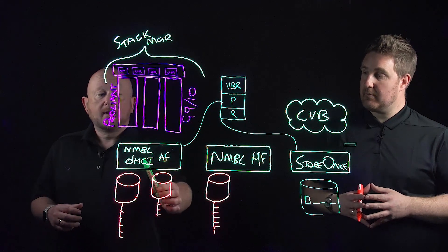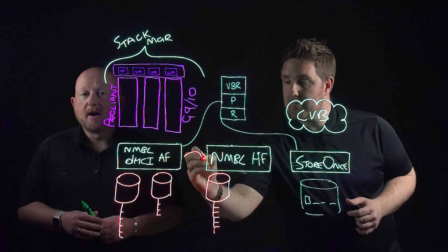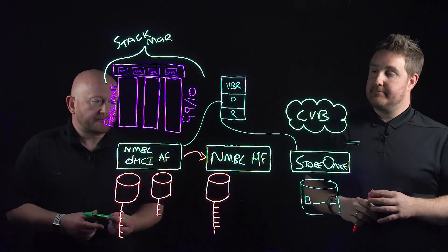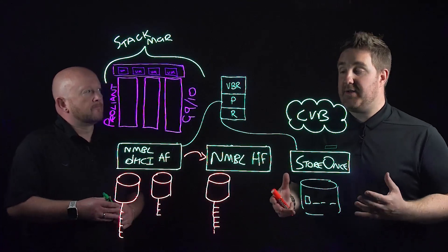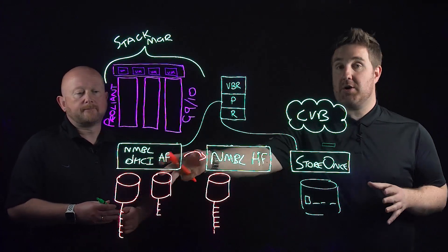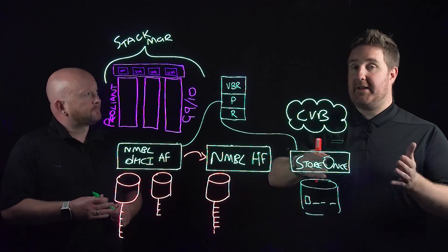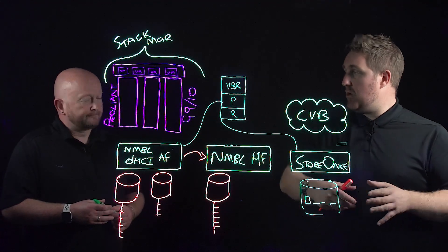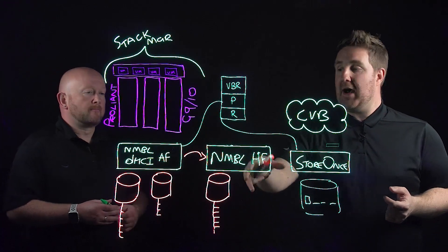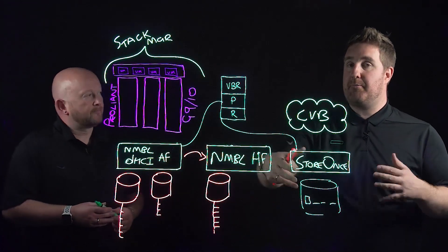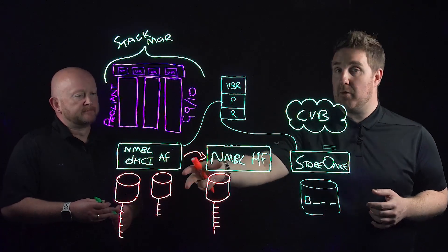We can also orchestrate replication out to a Nimble hybrid flash array. For instance, you could have a brand new DHCI-enabled Nimble array for production and an older generation Nimble array that you now want to use for replication or even backup. You can repurpose it — all-flash in production, the older array for backups and disaster recovery — and Veeam can augment everything using Nimble-based replication.